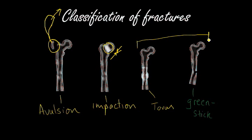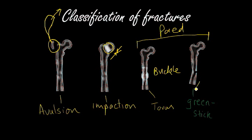Torus fractures and greenstick fractures tend to happen in the paediatric population. A torus fracture is also called a buckle fracture because the bone, having a much greater percentage of cartilage, buckles instead of breaking cleanly. Greenstick fractures also occur in children, typically in long bones, where one cortex breaks and the other does not — the force causes the bone to bend and break on one side only, again due to the higher cartilage composition.